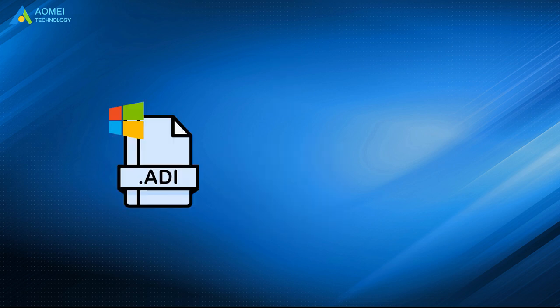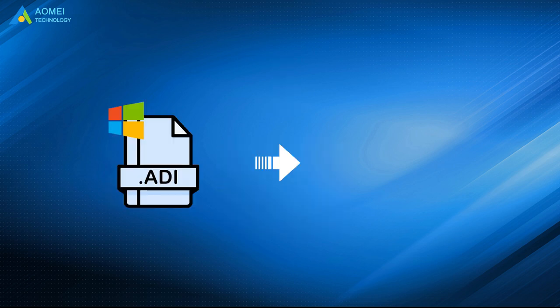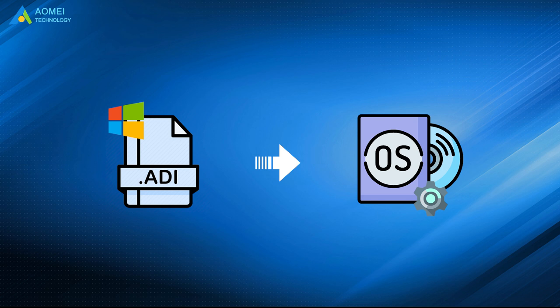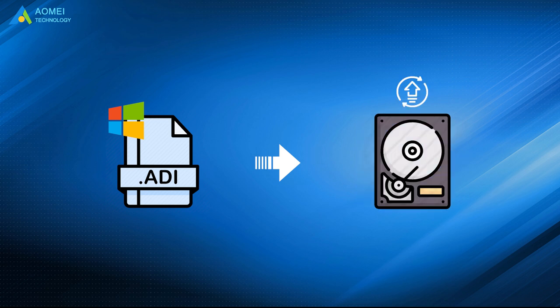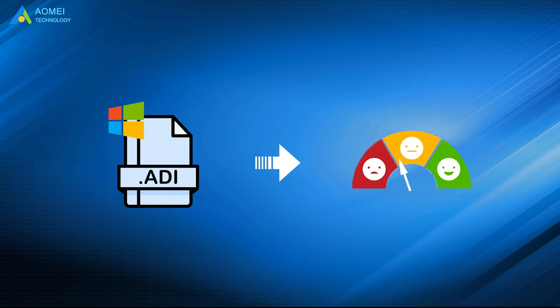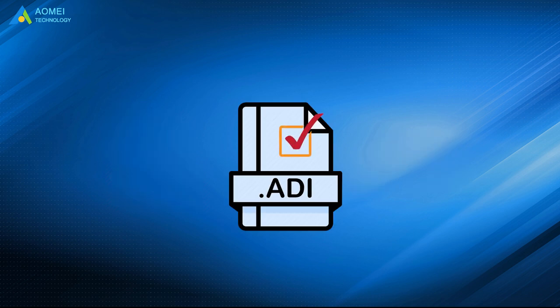A system image is very useful for OS development, hard drive upgrade, performance optimization, and so on. So it is necessary to create a system image backup in Windows.